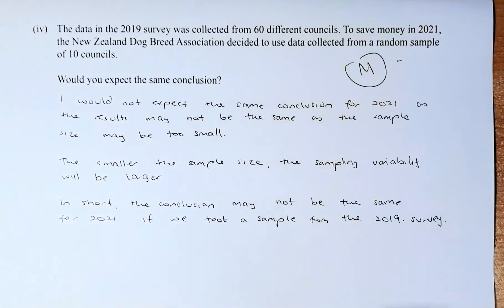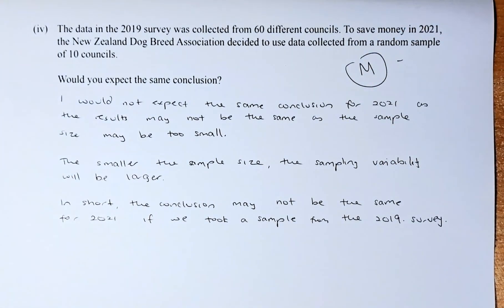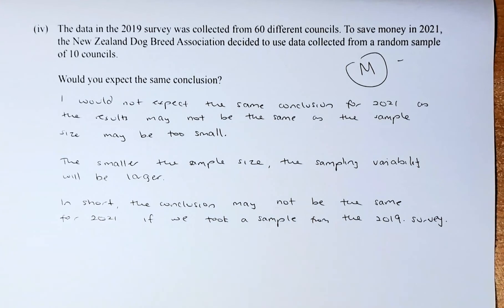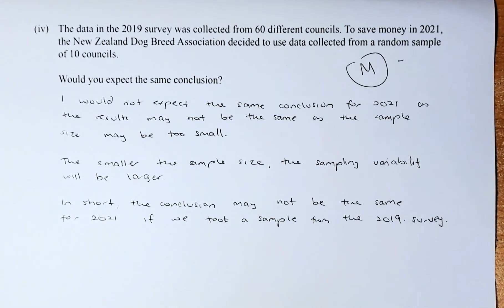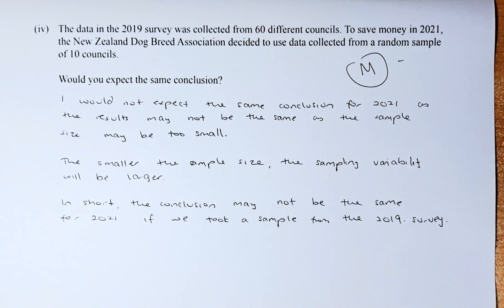All in all, there are four short answer questions for 2A. With two excellence, one merit, and one achieve — if you can answer them all, you should do well in this paper. Cheers everyone! If you have any questions, just leave your comment in the comment section below and I'll try to help. Have a good day.